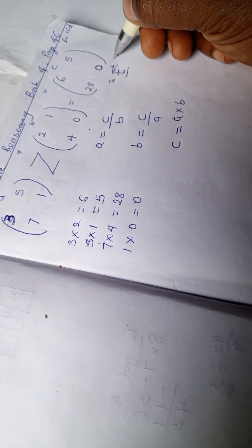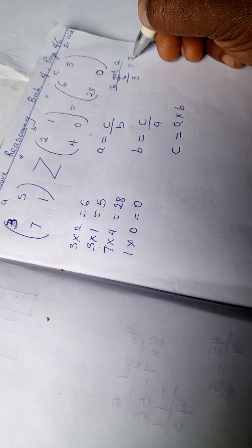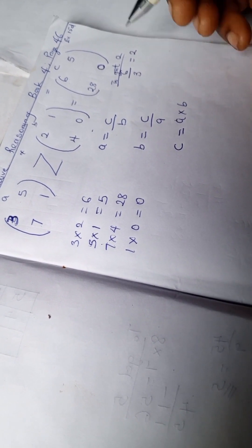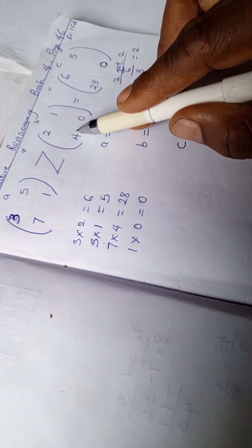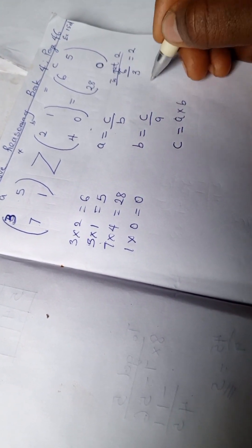Same here, to get 4, we have 28 divided by 7 is 4.